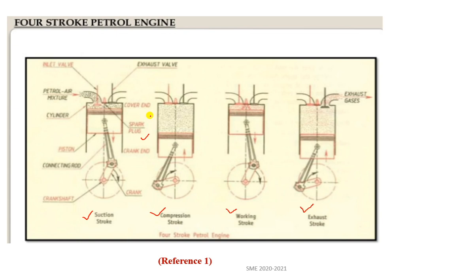When cranking the engine using a button start or kick start, the piston moves from the top dead center (TDC) to the bottom dead center (BDC). During the suction stroke, the inlet valve opens and the petrol-air mixture from the carburetor enters the engine cylinder as the piston moves from TDC to BDC. The valve then closes.